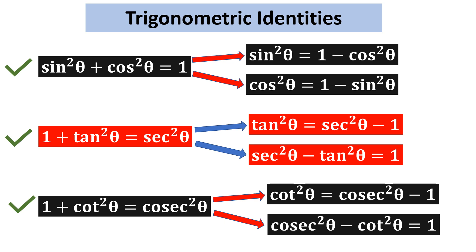These 3 identities are very important. You must keep in mind that this is a very important topic, and in the examination you will surely get either a 3-mark question or a 4-mark question from this topic on trigonometric identities. Now let us solve some questions based on these identities.